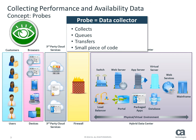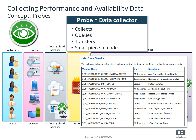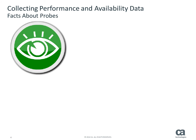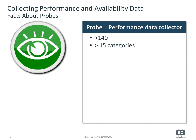Each probe has a specific job that is responsible for collecting specific data. For example, in the category of application probes, there is a Salesforce probe, pre-built and configured to gather specific information about Salesforce. It can be installed on the Salesforce system itself, or it can be installed on a remote system and configured to monitor it from there. UIM consists of over 140 probes in about 15 different categories that are pre-built and configured to proactively monitor and manage infrastructure components and overall quality of service.